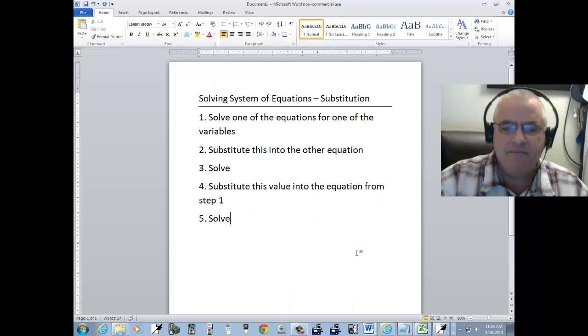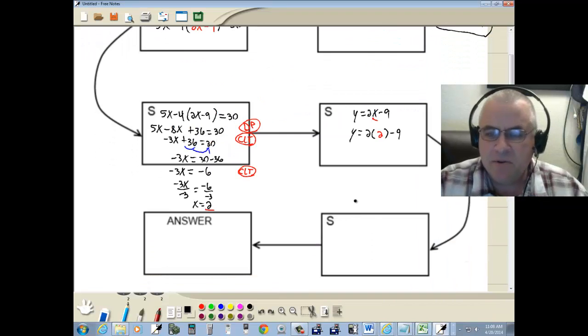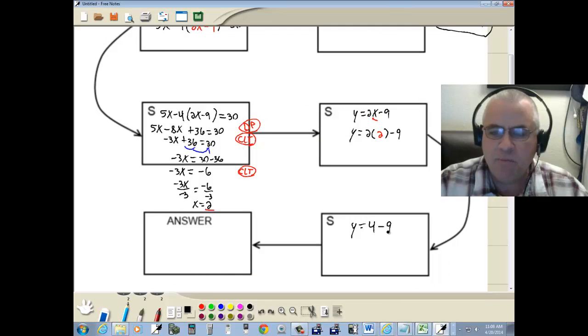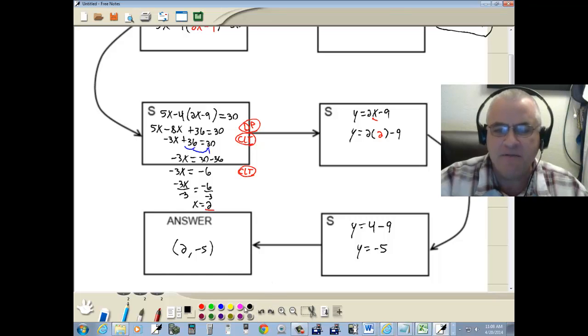And then step 5 says solve. So 2 times 2 is 4. And 4 minus 9 gives us negative 5. So our answer, our x was 2. And our y was negative 5. So our answer is 2, negative 5.